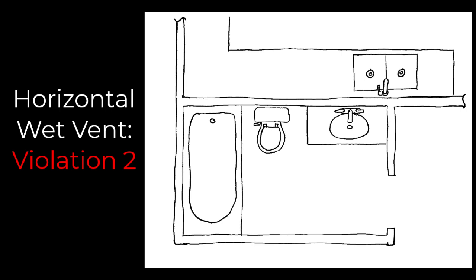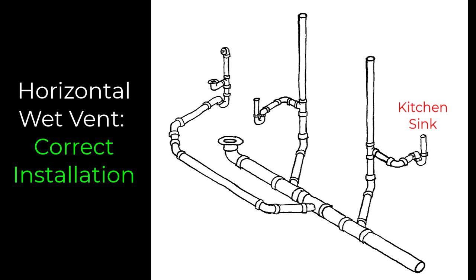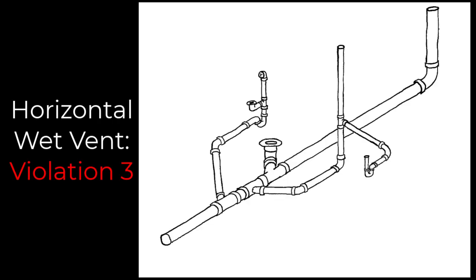Horizontal wet vent violation two: we have a bathroom group with a tub, toilet, and lavatory. On the back side of the wall there is a kitchen sink very close in proximity. While it would be convenient to branch off and go to the kitchen sink from the lavatory drain, this does not fit the definition of a horizontal wet vent — it is restricted to bathroom fixtures only. The kitchen sink should be piped outside or around the horizontal wet vented bathroom group, branching off separately and downstream.